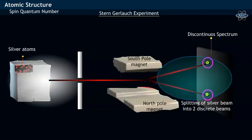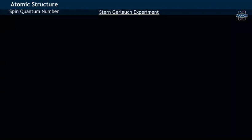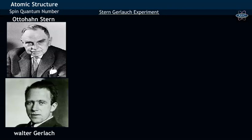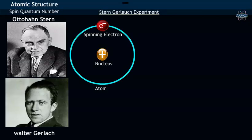In order to explain the splitting of silver single beam into two beams, the idea of spin of electron has been introduced. Both the scientists have proposed that the spinning electron around the nucleus has got two states of spin, one spin-up shown by upward arrow, while the spin-down is depicted by a downward arrow.